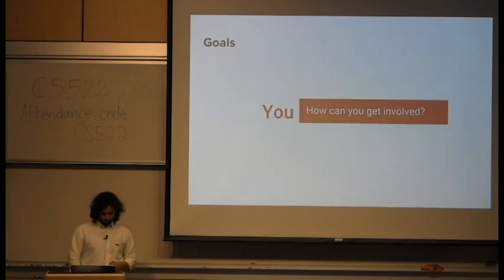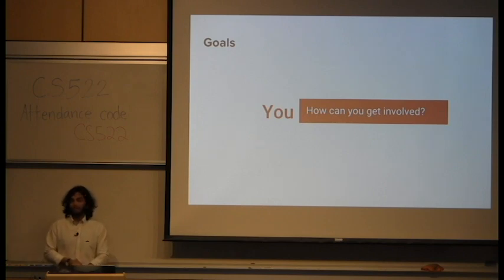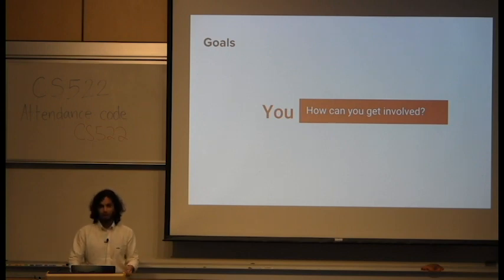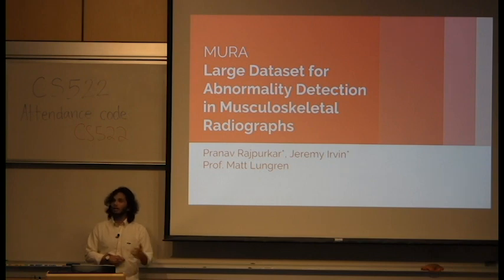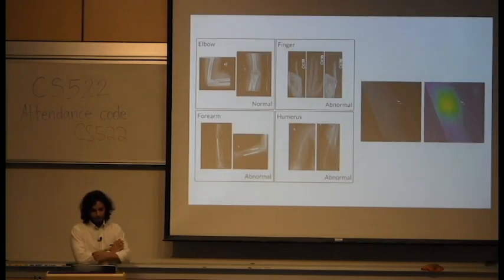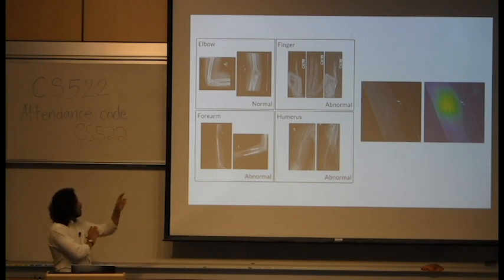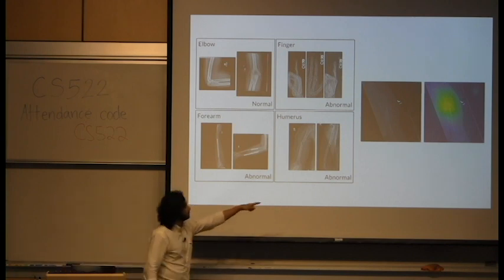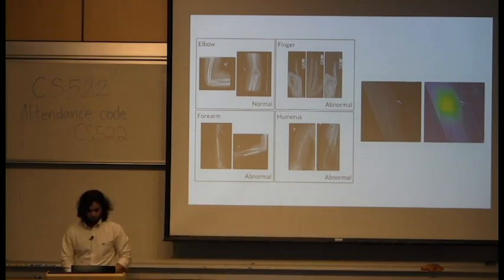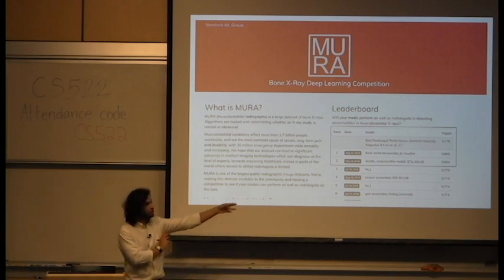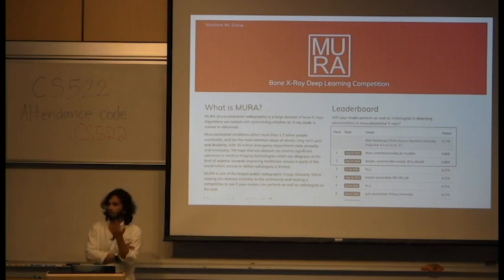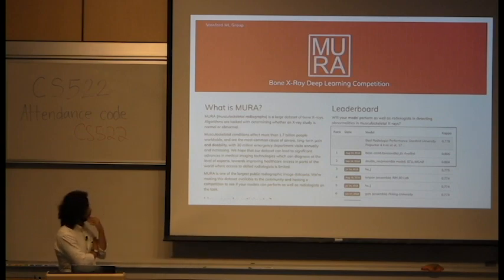How can you get involved in AI for healthcare work? One way is to do a project on your own. We released a large dataset of musculoskeletal radiographs where the task is to determine if an x-ray is normal or abnormal. Here's the model identifying a fracture. You can go to the website, download the data, develop your own model, submit to the leaderboard, and see how you compare. Recently we had two submissions that beat the best radiologist score — and these are Stanford radiologists, so they're quite good.